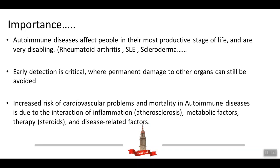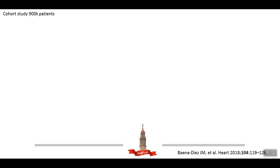The increased risk of cardiovascular problems and mortality in autoimmune disease is usually due to interaction of multiple factors: inflammation, which is the common base for both atherosclerosis and autoimmune disease; the metabolic factors that arise with the autoimmune disease; treatment with steroids that affect the metabolic profile of the patient; and other disease-related factors including disability, stress, and psychological impact.